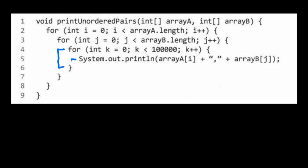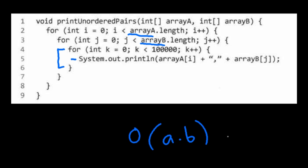So we're really just worried about the two outer for loops. The top loop iterates through array a, and for each index in array a we loop through the entirety of array b. You might think that's n² since two loops are nested, but that's wrong — these are two different arrays. We have to say array a is of size a and array b is of size b, so our Big O here is O(a × b), because the arrays could be different sizes.